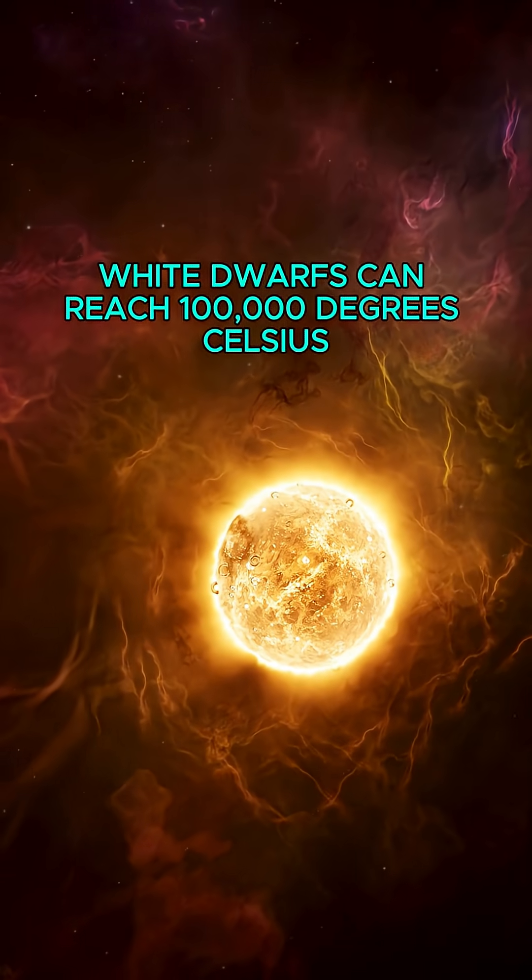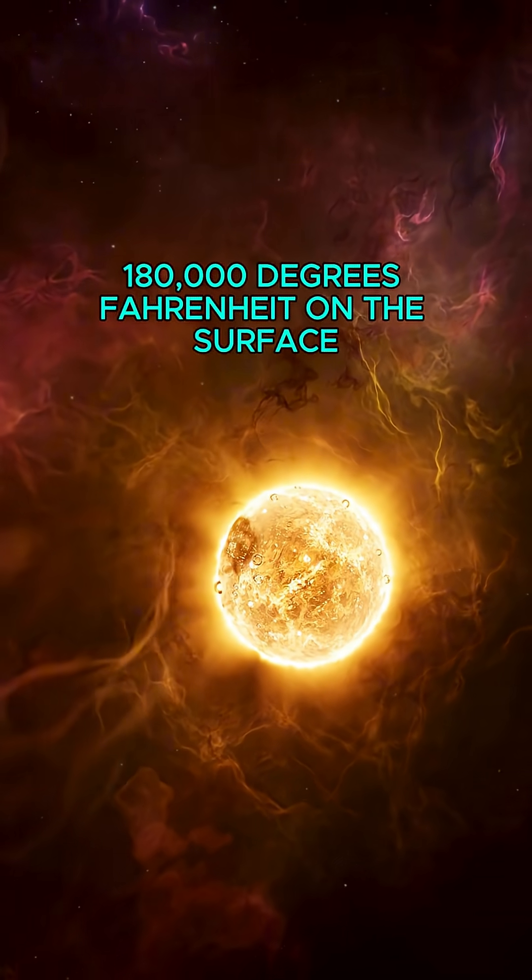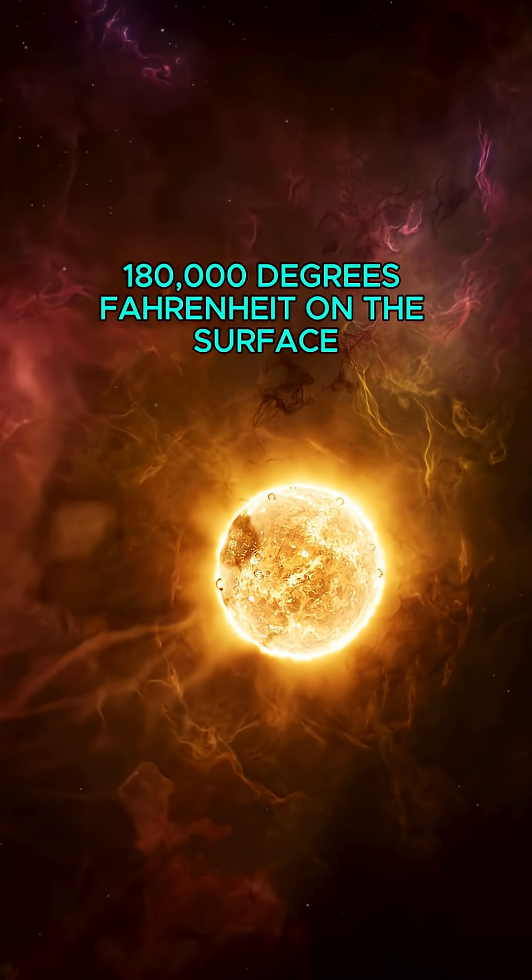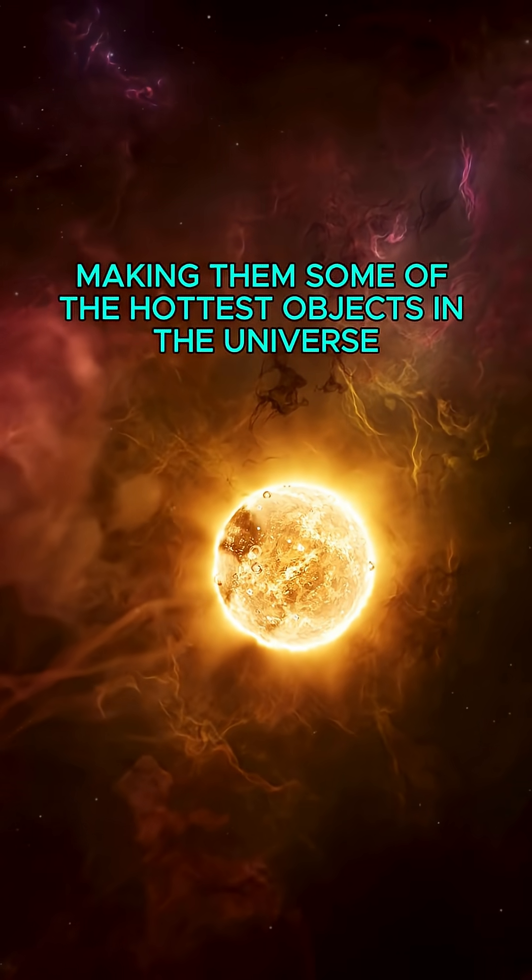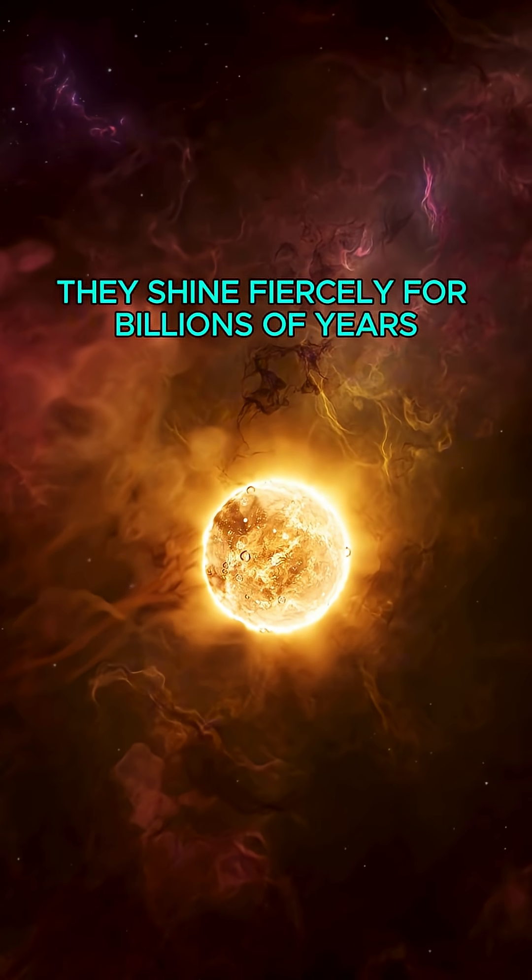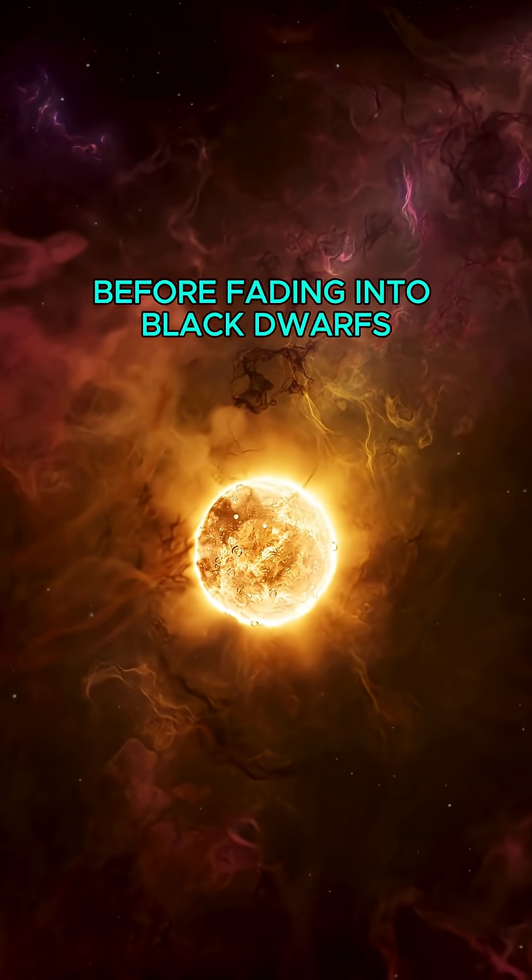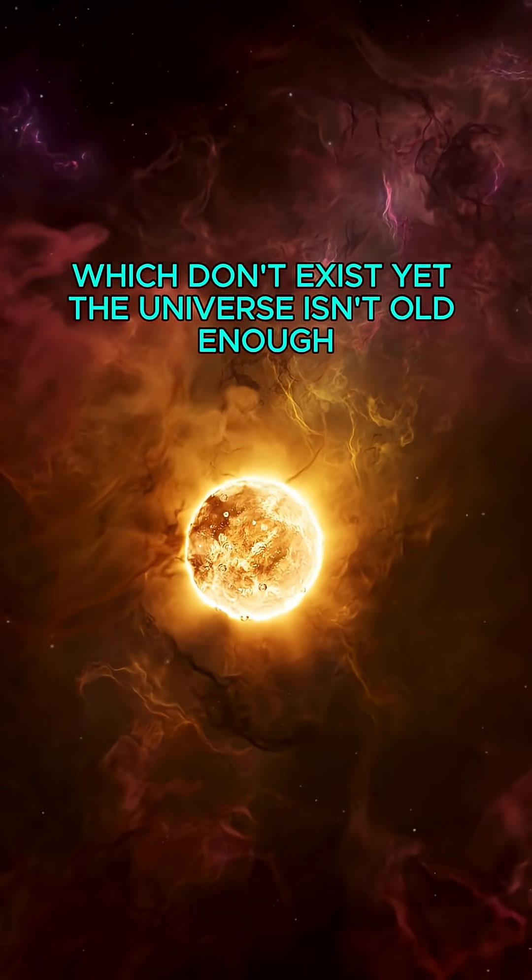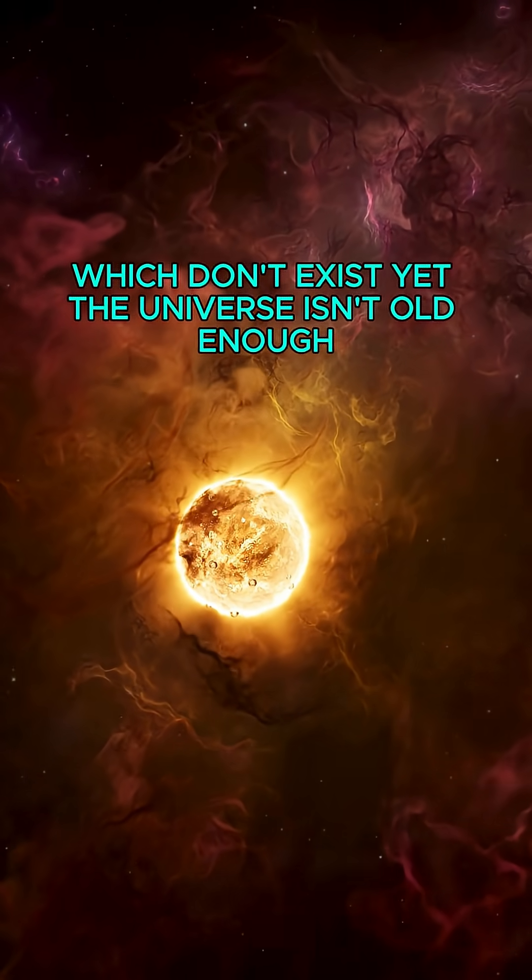Newly-born white dwarfs can reach 100,000 degrees Celsius, 180,000 degrees Fahrenheit on the surface, making them some of the hottest objects in the universe. Even though they're just about Earth-sized, they shine fiercely for billions of years before fading into black dwarfs, which don't exist yet - the universe isn't old enough.